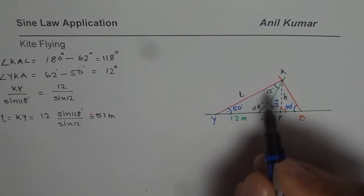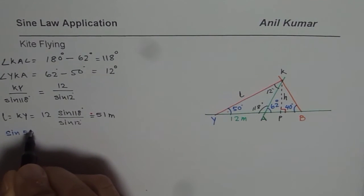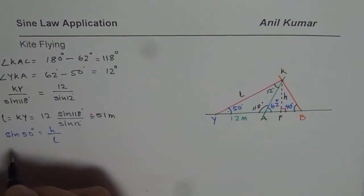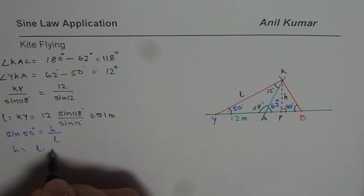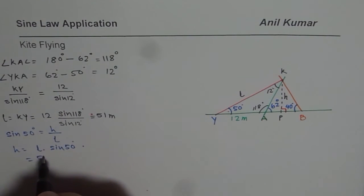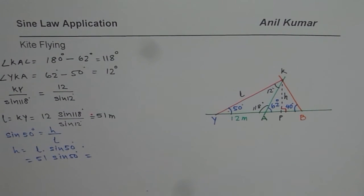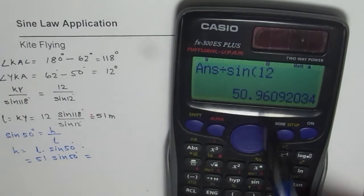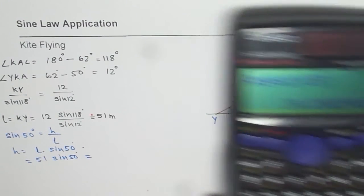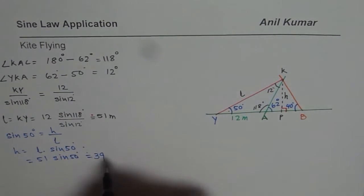So we say sine of 50 degrees equals height over L, and therefore height equals L times sine of 50 degrees. Writing the values: 51 meters times sine of 50 degrees. Using 50.96 times sine of 50 degrees, we get 39.0. So the height H equals 39 meters.